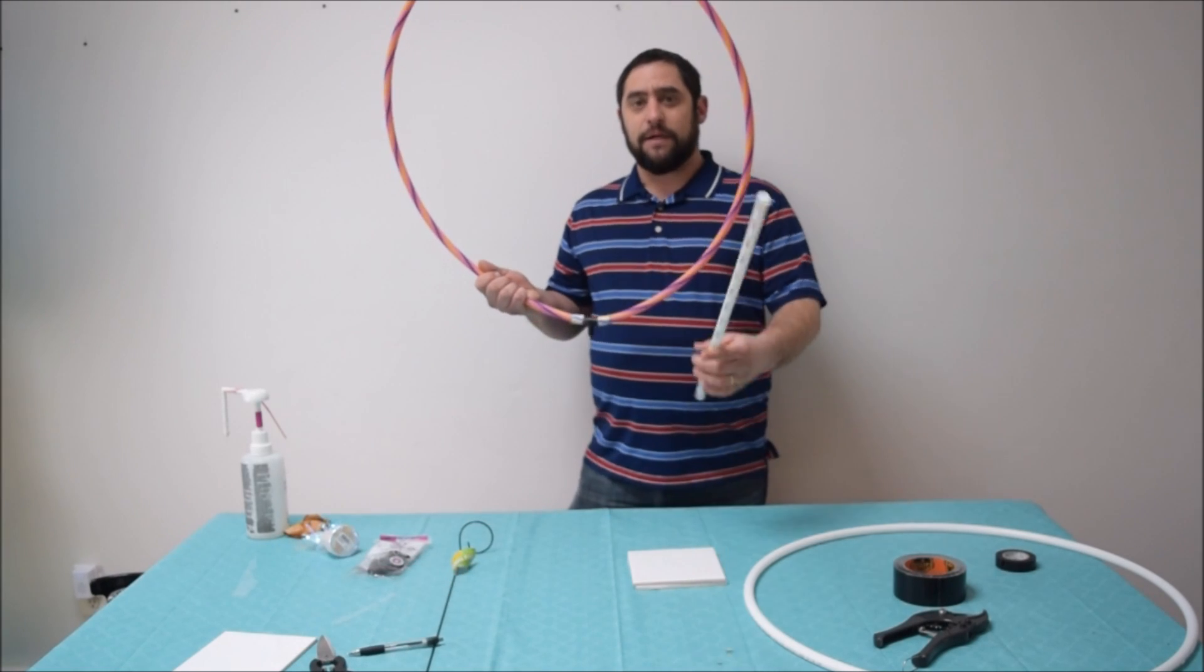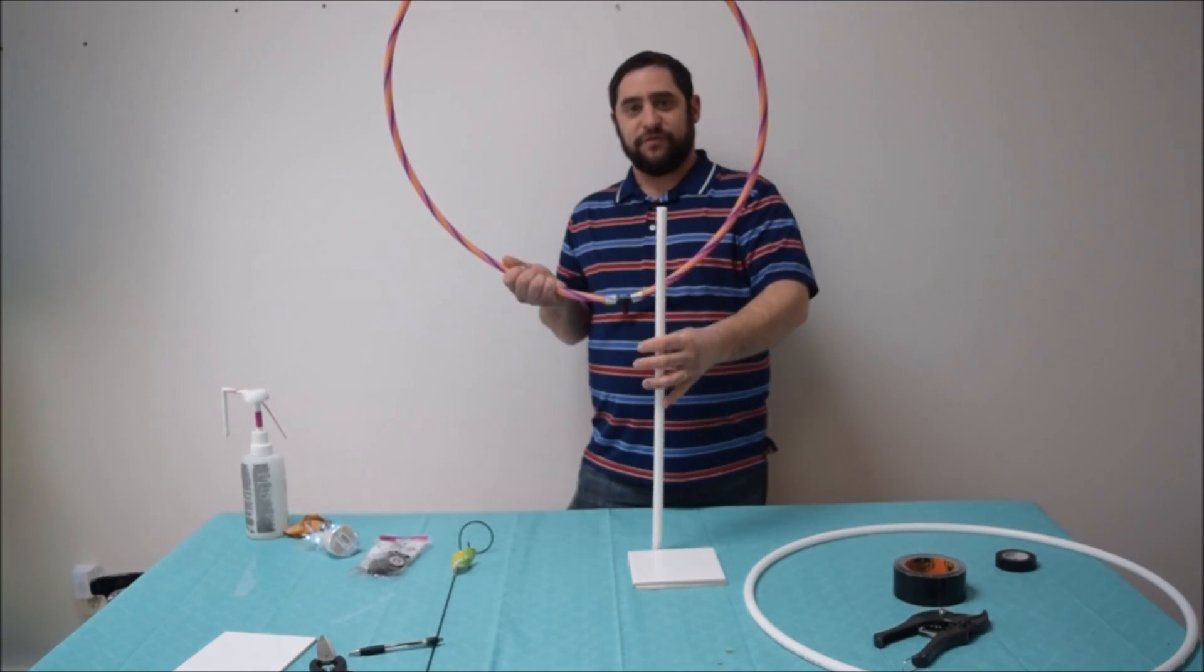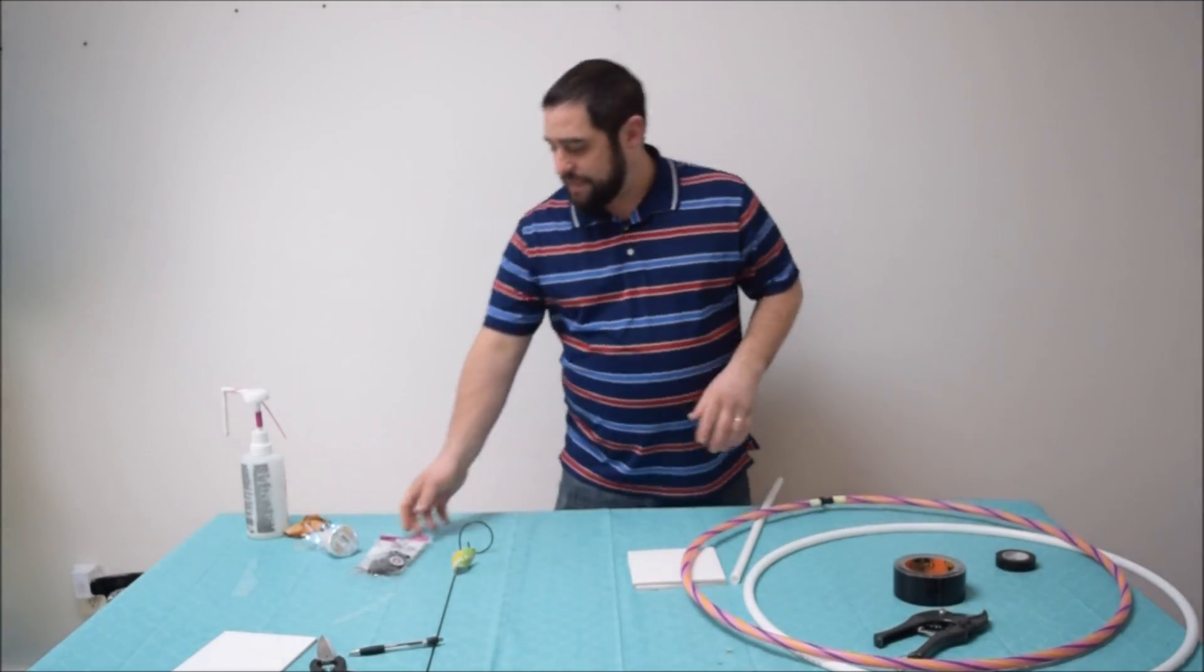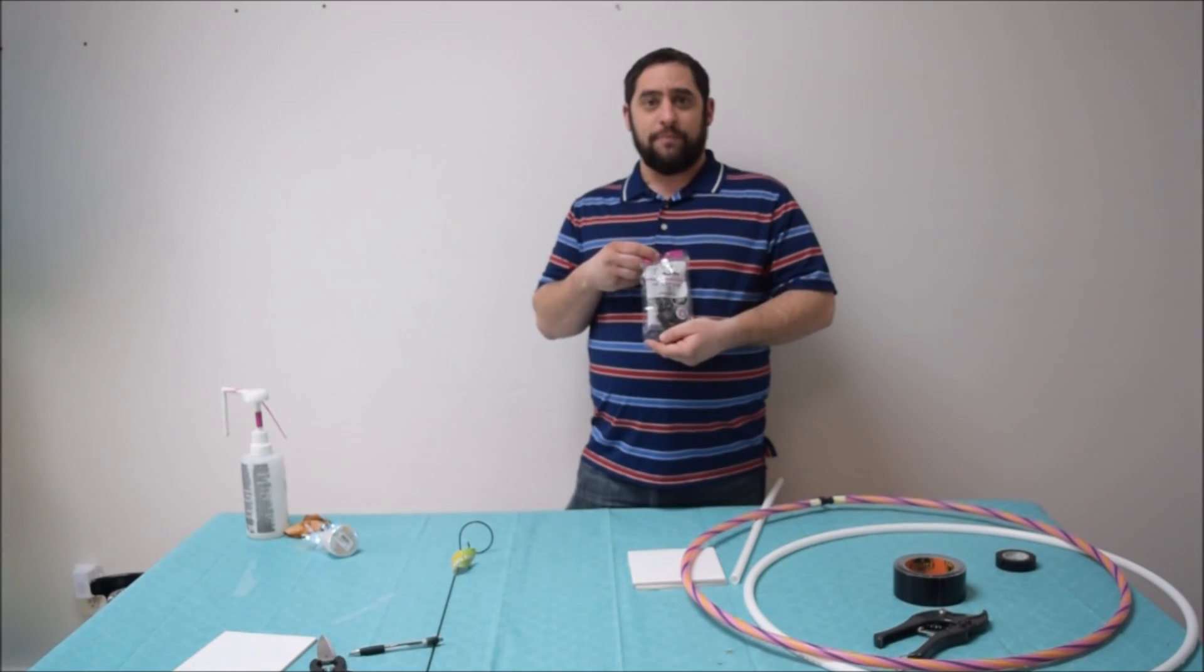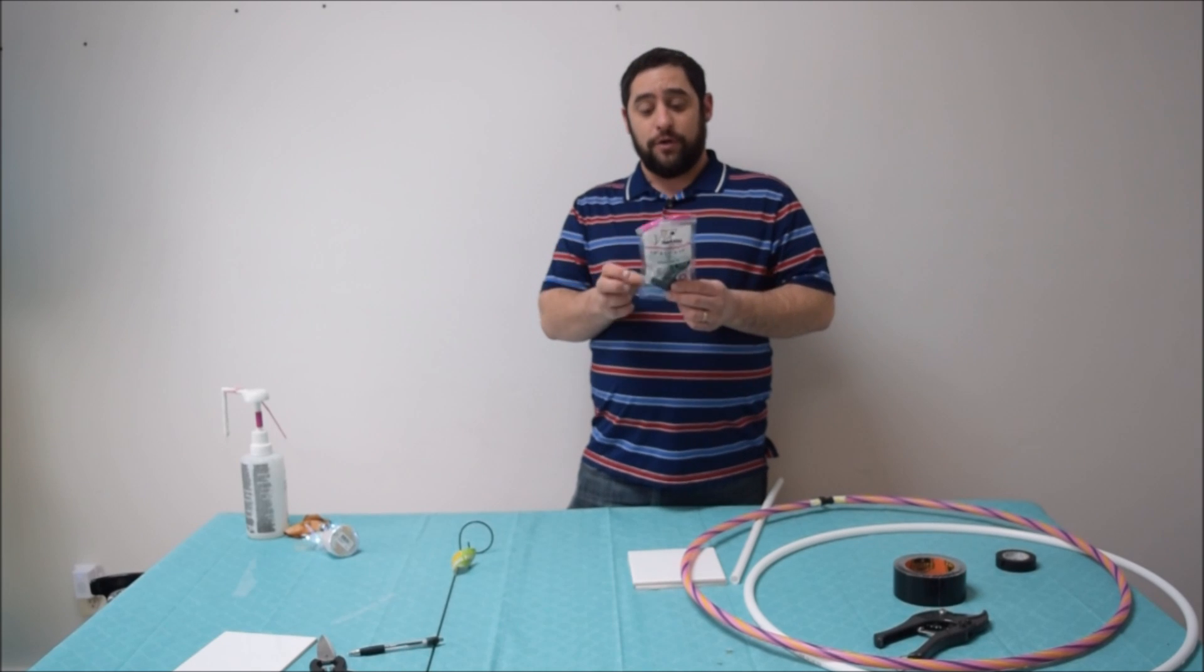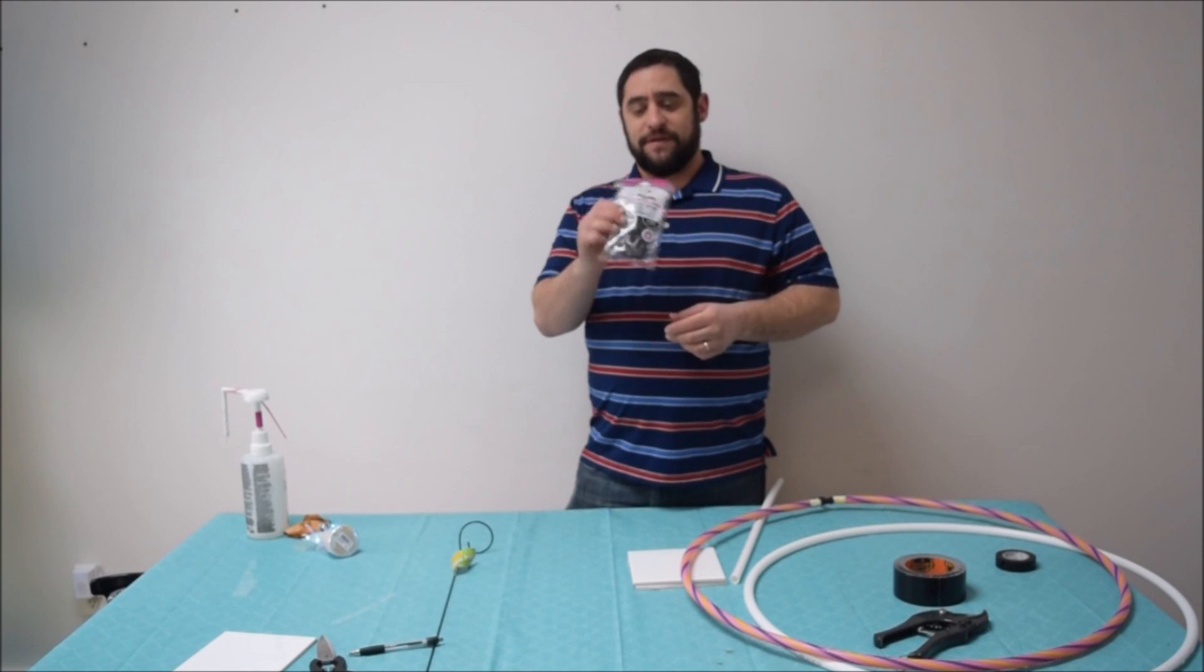But you're still gonna need a little bit of the PEX pipe to go onto our pedestal stand, which I'll show you in a second. So I'm gonna show you two different ways. We're gonna take our SharkBite PEX couplers. It's basically a three-way coupler. It doesn't need to be SharkBite, it's just a three-way PEX coupler.